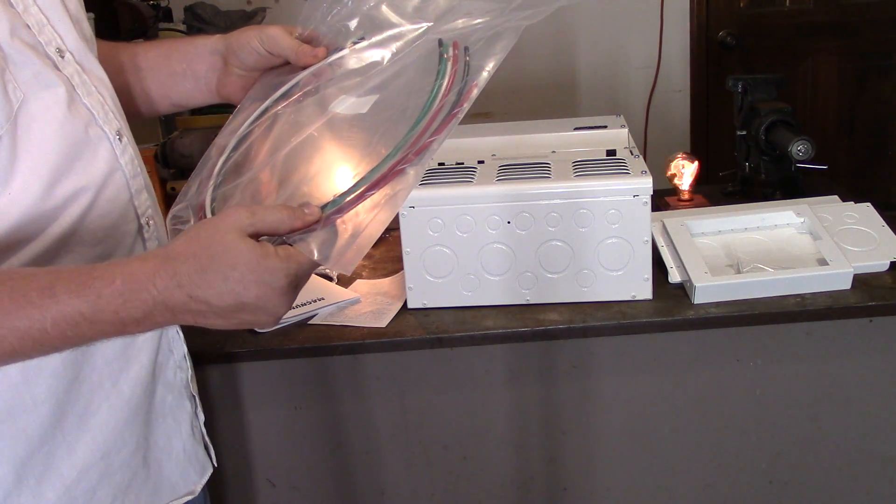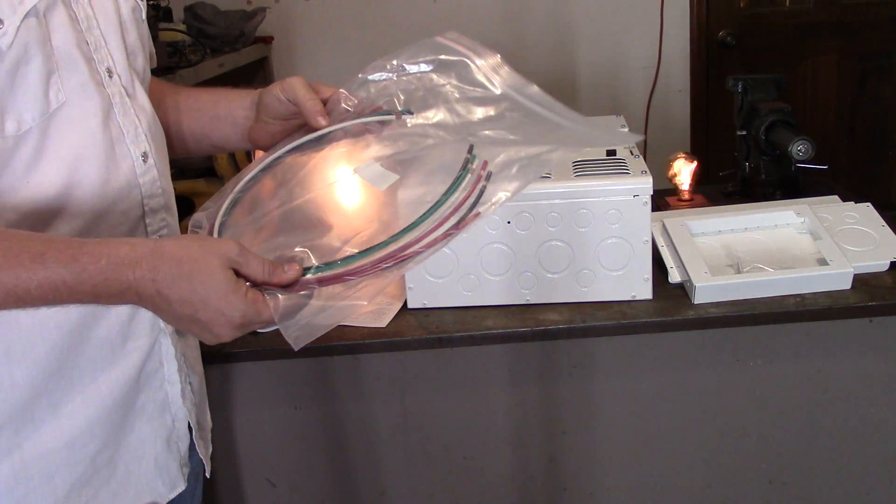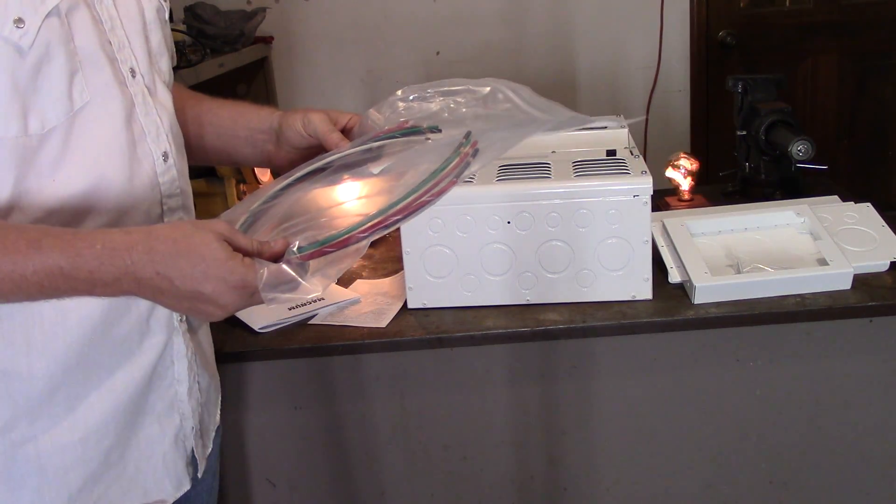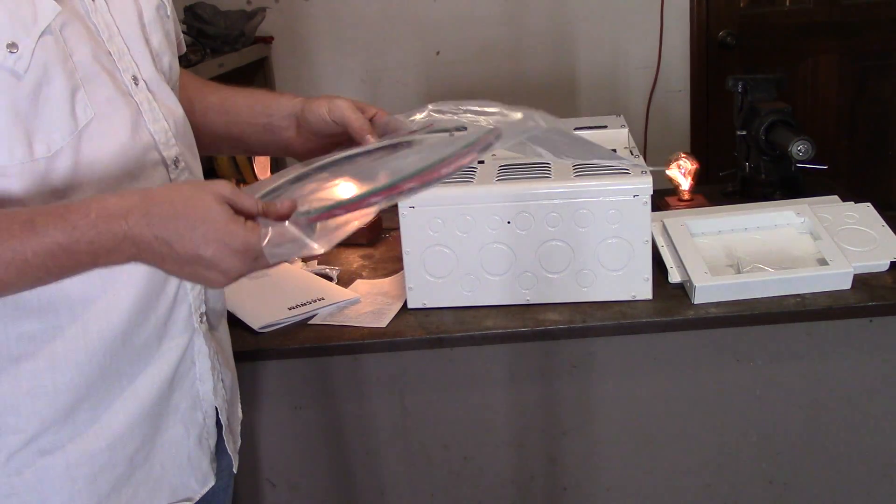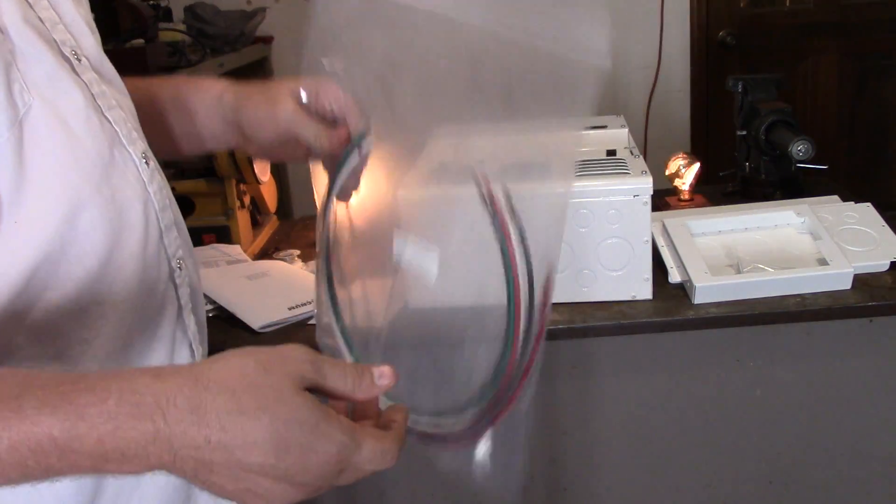Is apparently we got a black wire, black striped wire, a red wire, a red striped wire, a green wire, and a white wire is going to be the neutral leg.